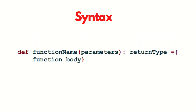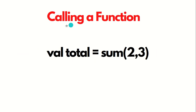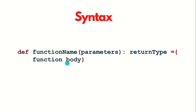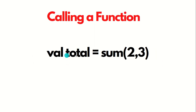Now let's move further. This is the generalized syntax of functions: DEF, space, function name, then in parentheses we can specify our parameters, colon, return type, equals sign, and then in curly brackets we specify the function body. This is how we can call the function. The function will be created, but we need to call it. We can call it like: sum, the function name, then specify the actual values in parentheses — two and three. The answer will be five, stored in a variable total, and we can print this total.